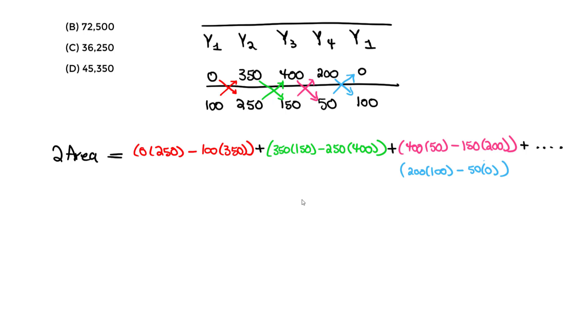So 0 times 250 minus 100 times 350, then we do plus 350 times 150 minus 250 times 400, then we do plus 400 times 50 minus 150 times 200, then we do plus 200 times 100 minus 50 times 0. We get a negative value. Don't worry about that negative, it's going to be an absolute value for that top portion. So you just put that value of 72,500. We know this is 2 times the area, so to get rid of this 2, we divide by 2.